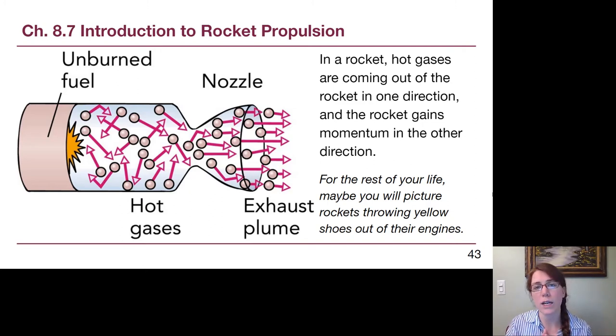A rocket at the very heart of it is simply a momentum conservation equation. Hot gases are coming out of the rocket in one direction moving extremely fast and having a lot of mass, and then the rocket goes in the other direction. And at the beginning of this situation it's not moving very fast because it has a lot more mass than what it's getting rid of, but eventually it speeds up and speeds up.